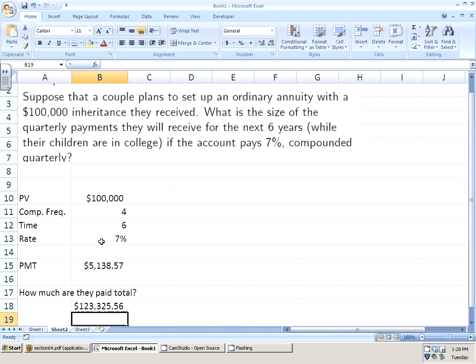They get $123,325.56 out of $100,000. That's a pretty good investment.